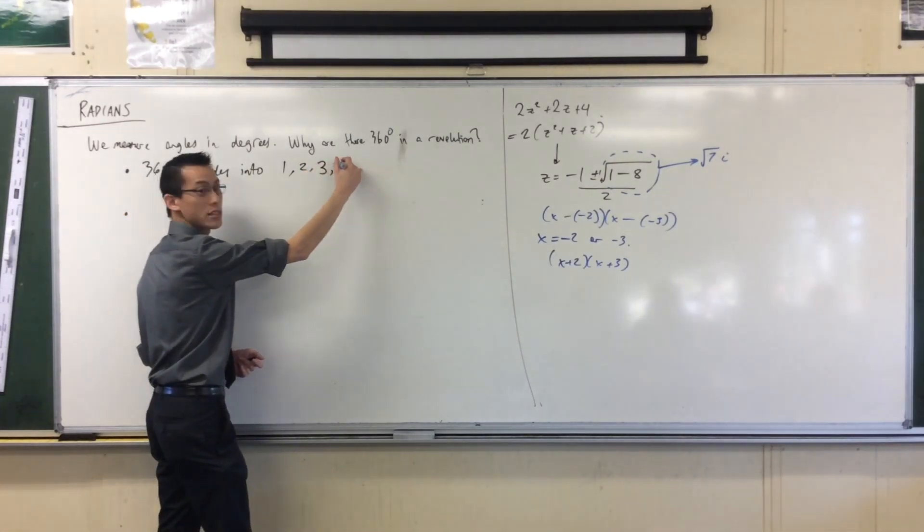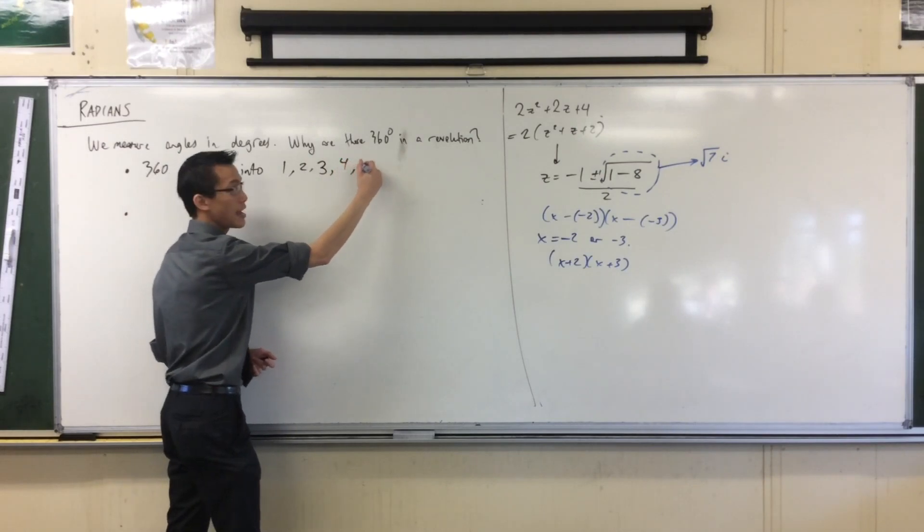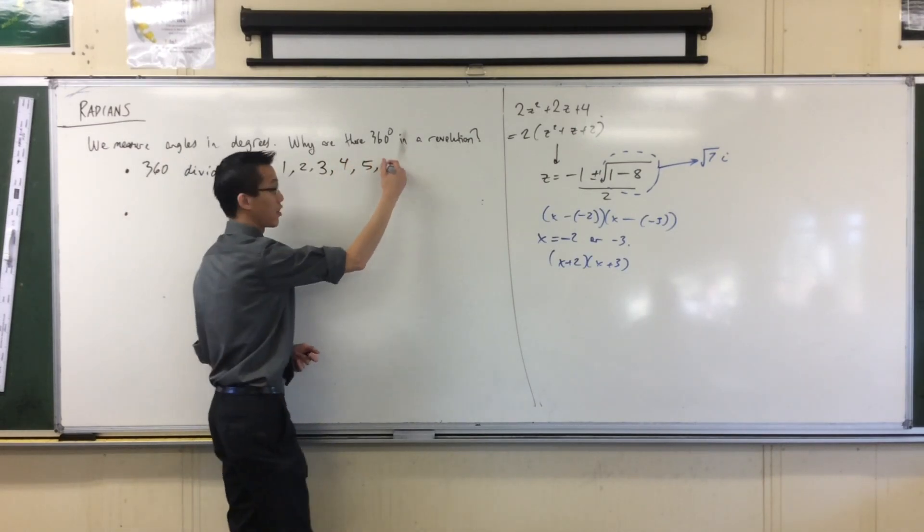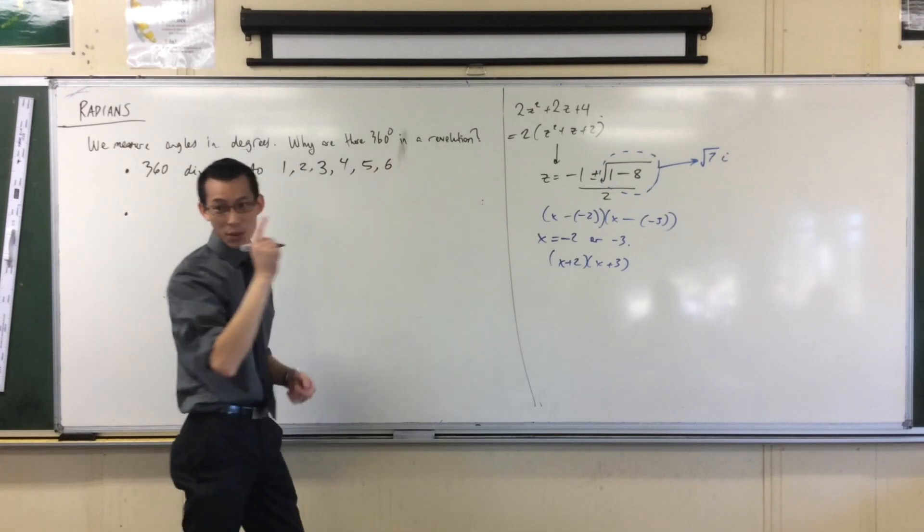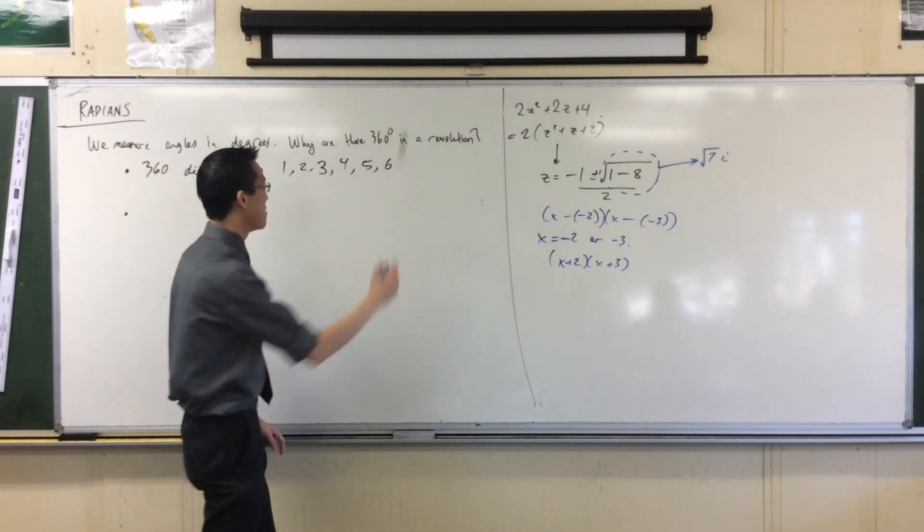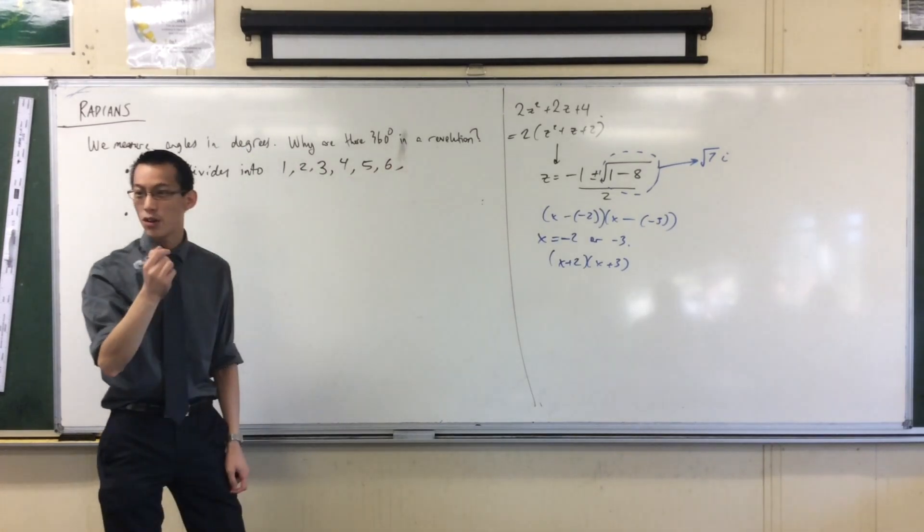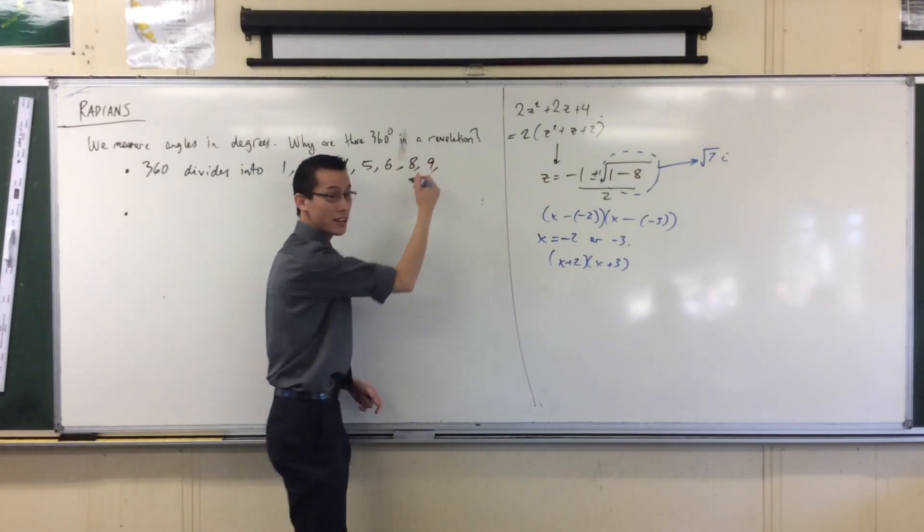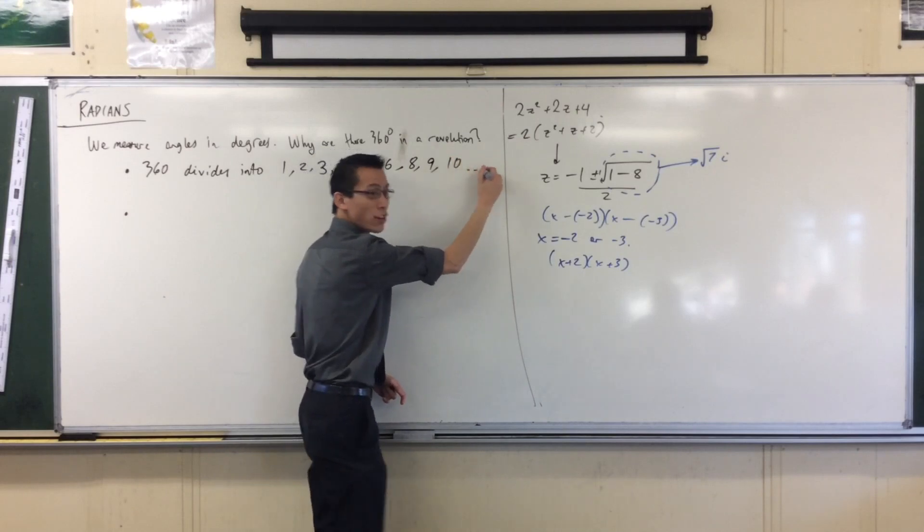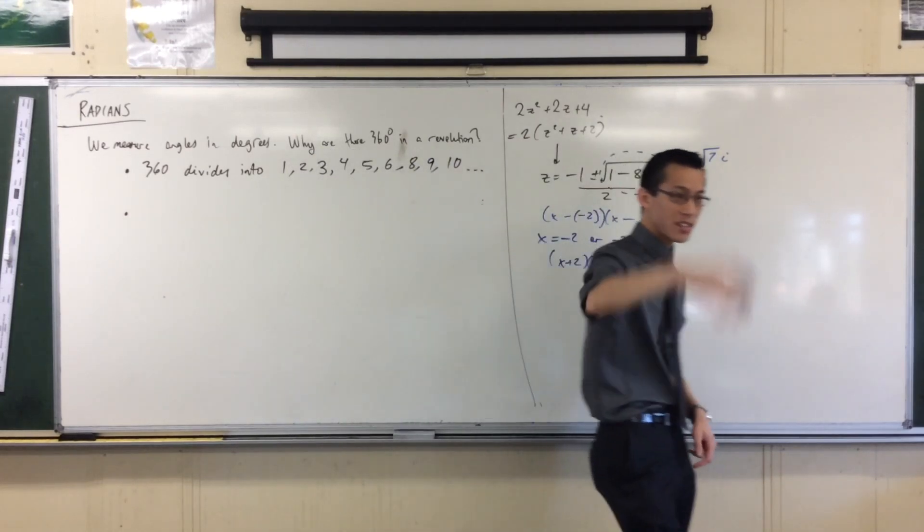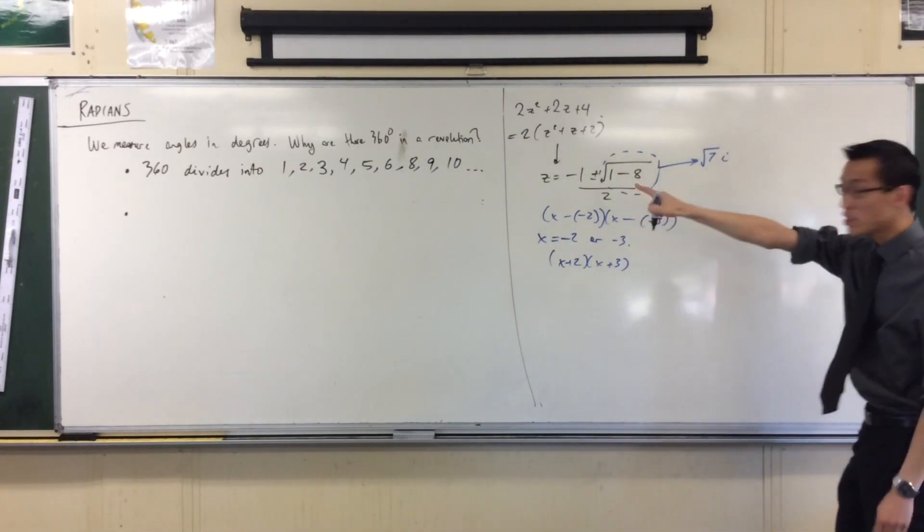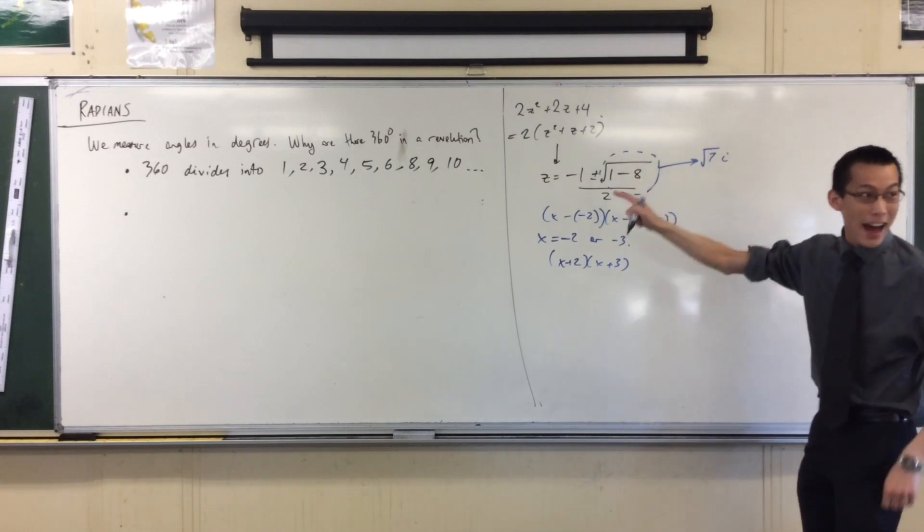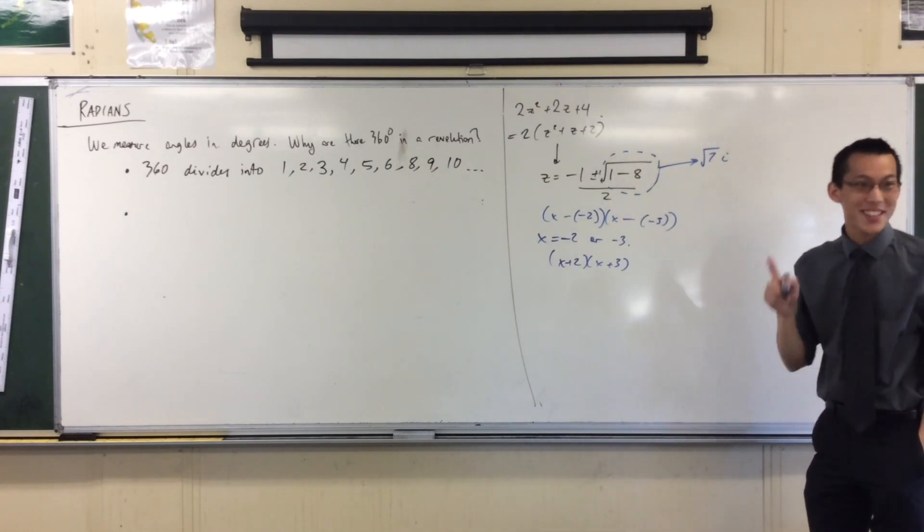It goes into 3, it goes into 4, it goes into 5, it goes into 6, doesn't go into 7 because 7's a punk. But it goes into 8, it goes into 9, it goes into 10. It goes into 12 and 15 and 18, but just look at that, it divides into 9 of the first 10 numbers.